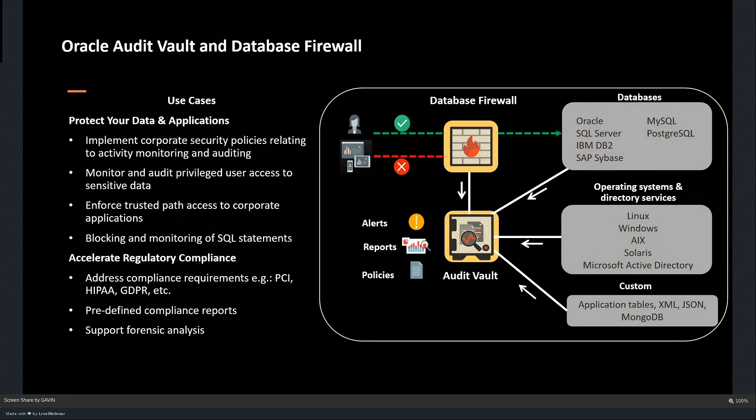If you have the database firewall in place, users of the application connect through the firewall and then into your Oracle, MySQL, or SQL Server database. The firewall is optional and can be run in a couple of different modes — you can run it in blocking mode or just in monitoring mode. The audit vault server has a repository. When you install the product, it creates a database and a user called AVSYS with a number of tables. The most important table is called the event log, where all information is stored.